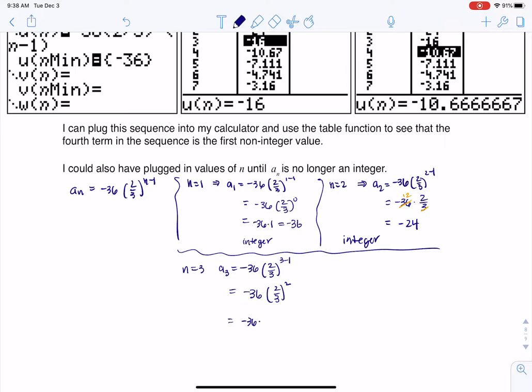So if I'm going to do that, that is negative 36 times 4/9. I can still do some division. 36 divided by 9 is 4. So negative 16 is my answer. Again, still an integer. So I'm going to keep on going.